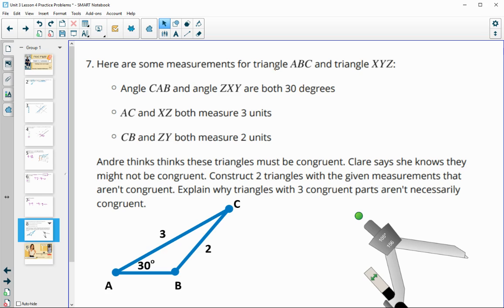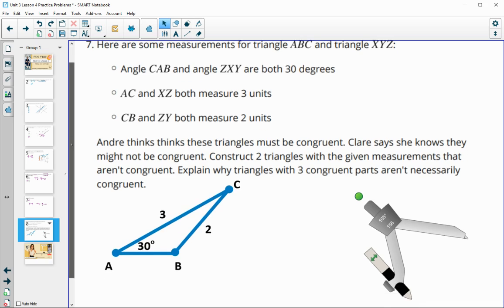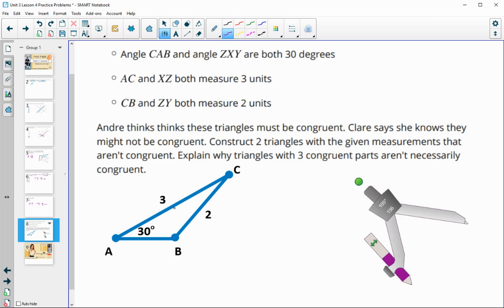So in number seven, they give us some measurements for triangle ABC and XYZ. And so I've drawn those measurements here into triangle ABC so we can see them. And it says that Andre thinks that the two triangles will be congruent to each other with these measurements. And so I've only drawn one triangle so far. But we can see that the two sides that are given to us do not contain the angle. So the angle is not between those two sides. So if you remember, that is not going to guarantee that the two triangles are congruent. So this is definitely not going to guarantee congruent triangles.